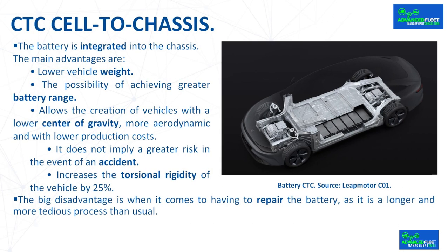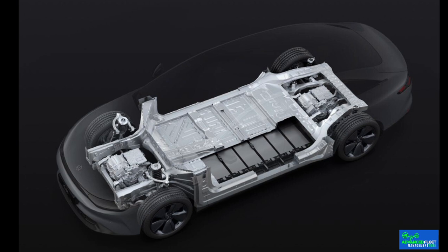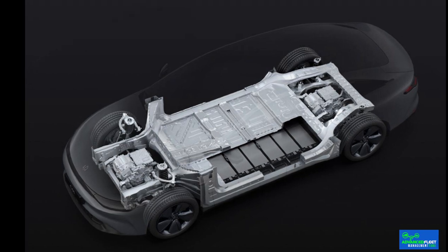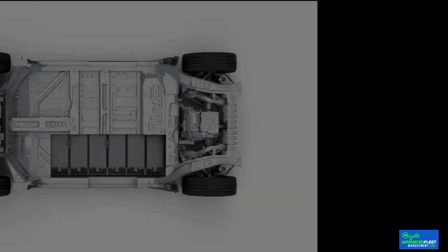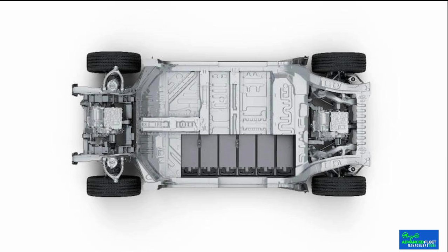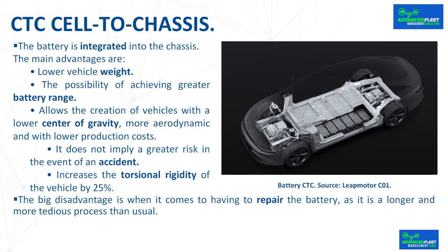CTC cell-to-chassis: the battery is integrated directly into the chassis, leaving more free space in the cabin while at the same time having greater rigidity. CTC technology can be understood as a further extension of CTP — eliminating the module and packaging process and integrating the battery directly into the vehicle chassis to achieve a higher degree of integration. The main advantages are lower vehicle weight, greater battery range, lower center of gravity, more aerodynamic design, lower production costs, and reduced height between the underside of the car and the interior floor.